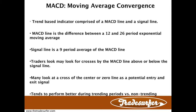This is a trend-based indicator comprised of a MACD line and a signal line. The MACD line is the difference between a 12 and a 26-period exponential moving average. The signal line is a nine-period average of the MACD line. Traders may look for crosses by the MACD line above or below the signal line, but many traders simply focus on that zero line as a potential entry and exit. This tends to perform better during trending periods versus non-trending periods. During non-trending periods, you may need to incorporate support or resistance and look for breakouts of the range before using this effectively.